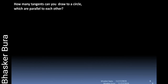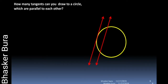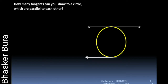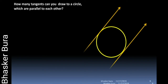How many tangents can you draw to a circle which are parallel to each other? It is possible to draw only two tangents at most to a circle. As we can see in the figure, it is possible to draw only two tangents which are parallel to each other. If we try to draw one more tangent parallel to these two, it will certainly intersect the circle at two distinct points, so that line will be a secant but not a tangent.